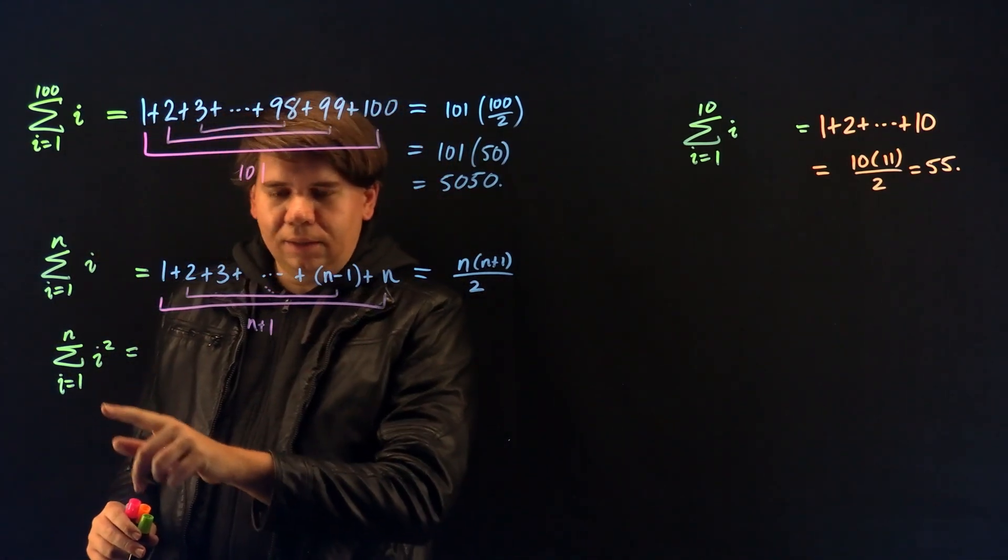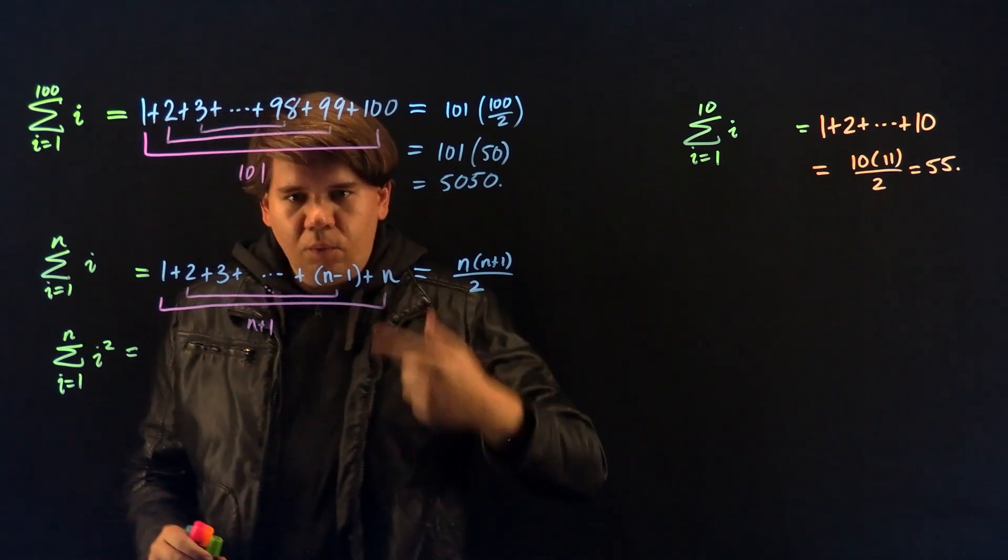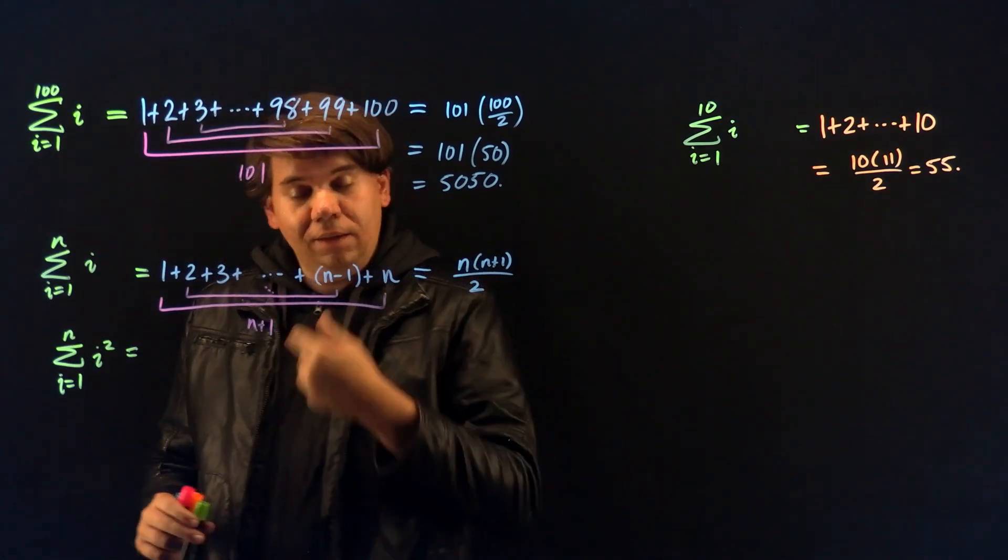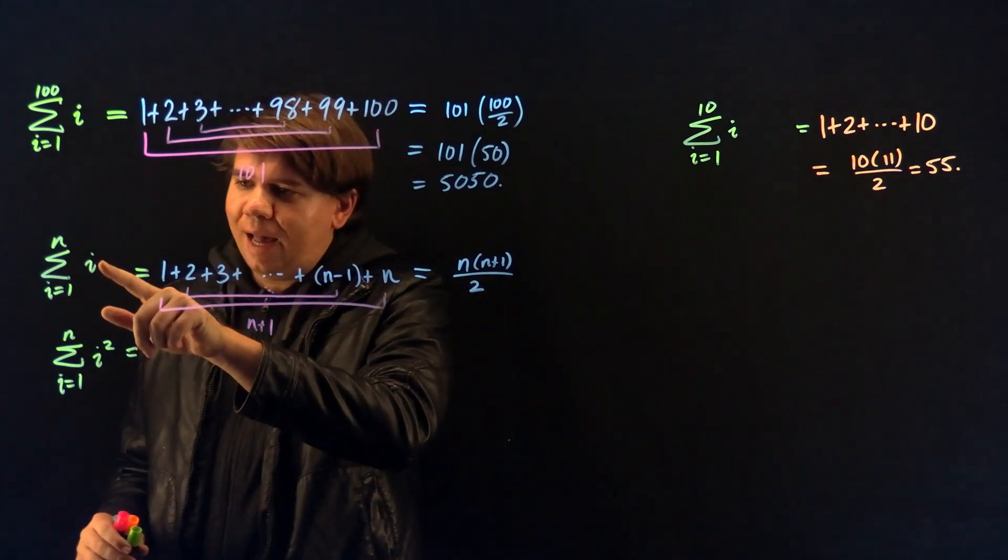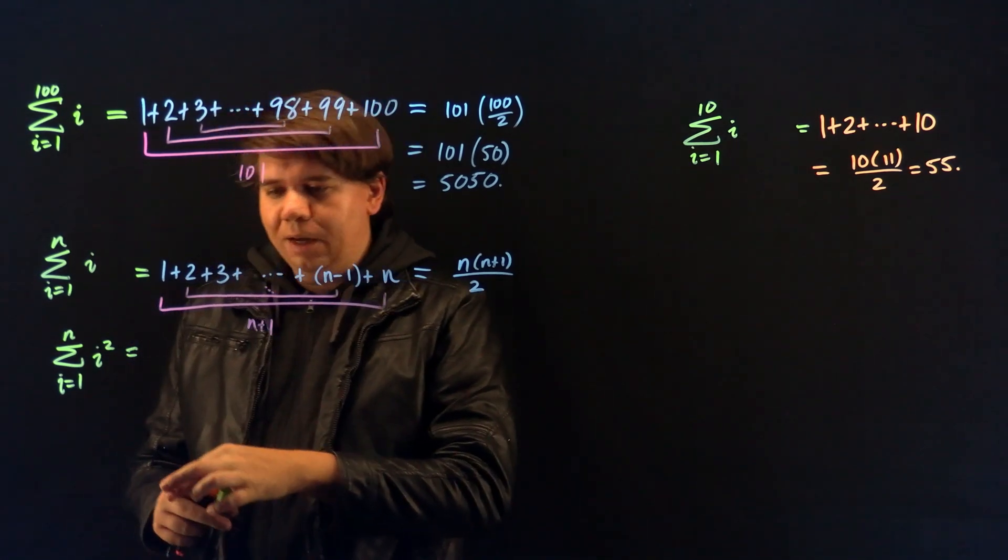The index is still going from 1 to n. 1, 2, 3, 4. So I'm still adding up when i is 1, 2, 3, 4. But instead of just adding up i, I'm now adding up i squared.